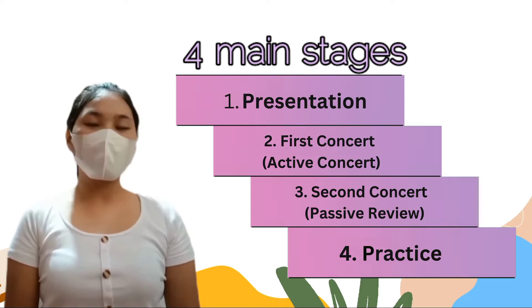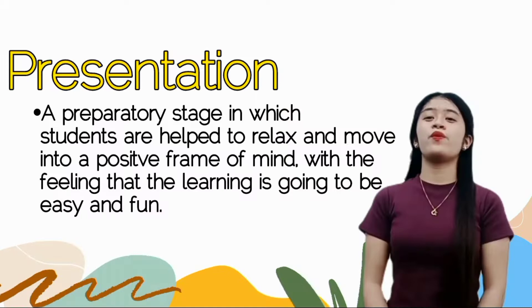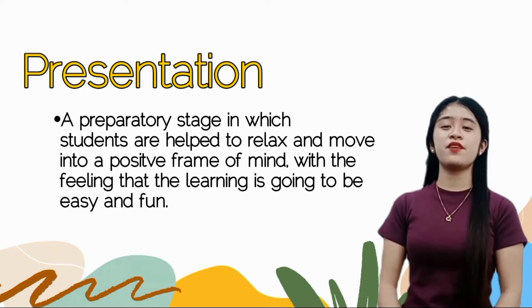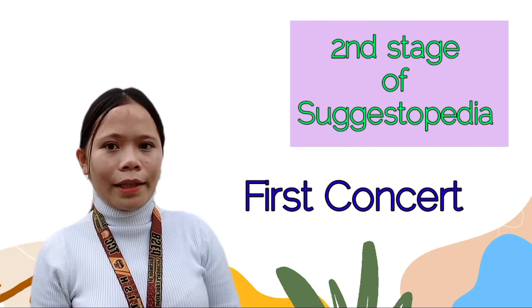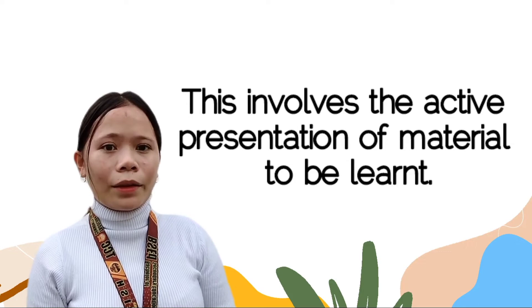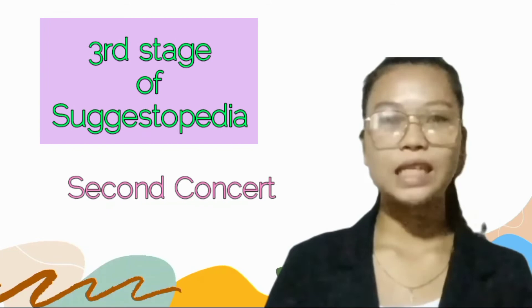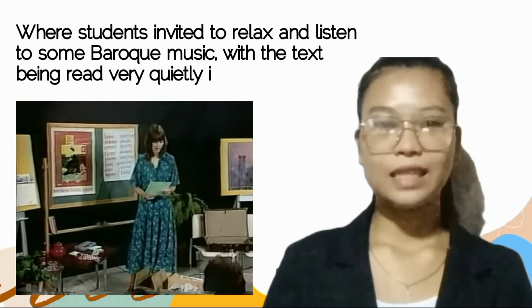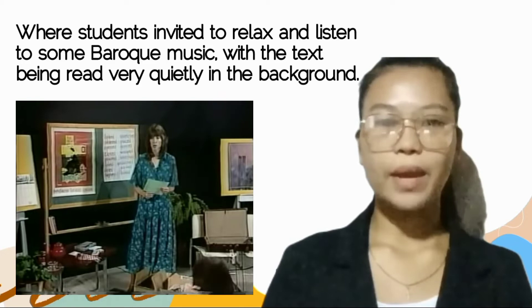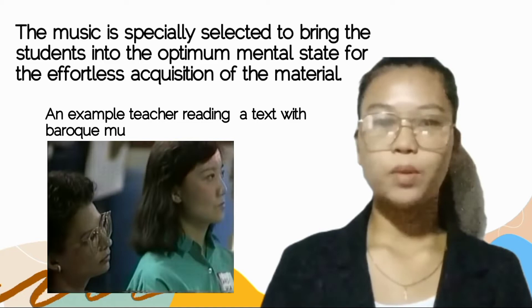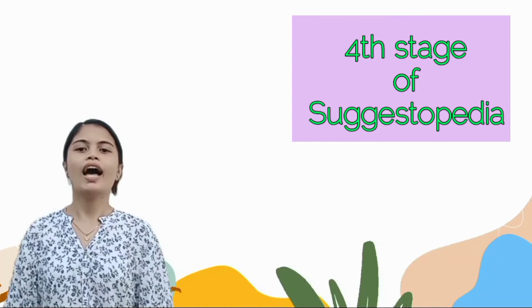Suggestopedia adopts a carefully structured approach, forming stages as follows. The first stage is the presentation, a preparatory stage in which students are helped to relax and move into a positive frame of mind, with the feeling that learning is going to be easy and fun. The second stage, also called the active concert, involves the active presentation of material to be learned — for example, in a foreign language course, a dramatic reading of a text accompanied by classical music. The third stage is the second concert or passive review, where students are invited to relax and listen to baroque music with the text being read very quietly in the background. The music is specially selected to bring students into the optimum mental state for the effortless acquisition of the material.